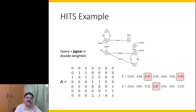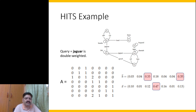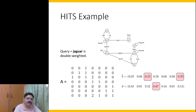Understanding the popularity of web pages is very useful when building search engines, particularly for ranking and scoring. There are two popular ways of doing this: one is to compute the PageRank for given web pages, and another is to focus topic-specifically using the HITS algorithm.